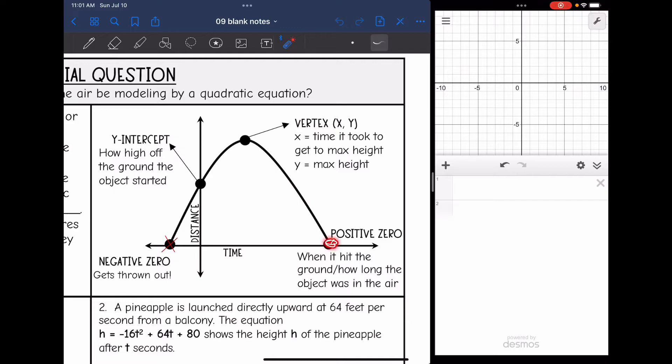The positive zero is when it will hit the ground or how long the object was in the air. We just throw out that negative zero because this isn't really a part of the path. It's just in quadrant one.